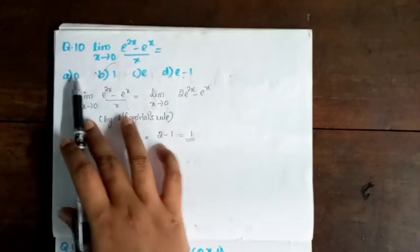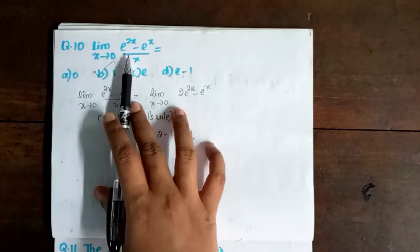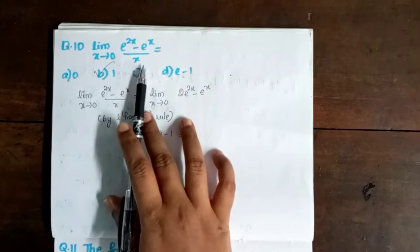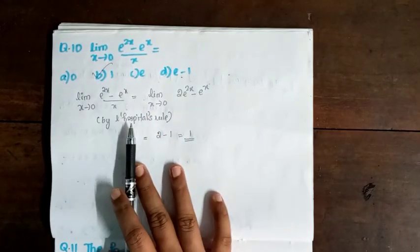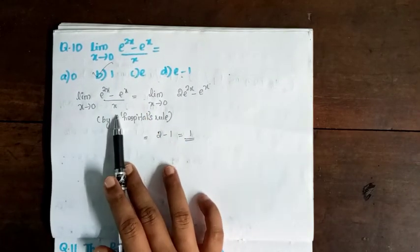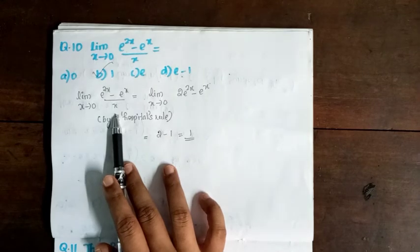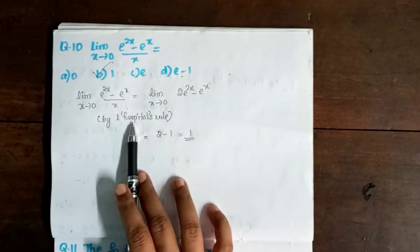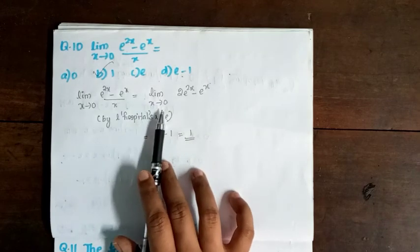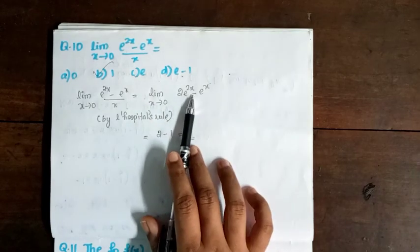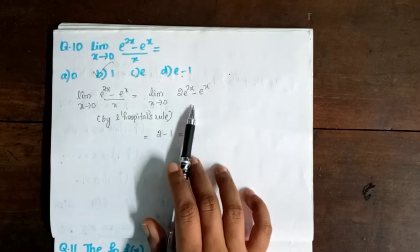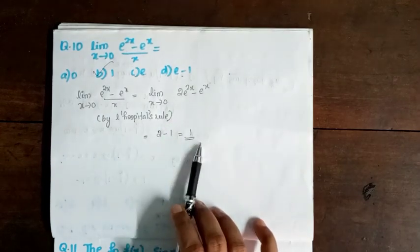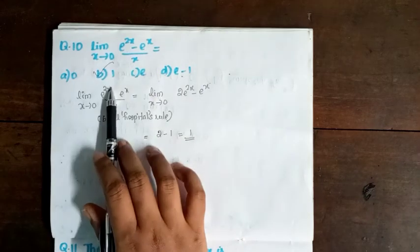Next question: limit x→0 of (e^(2x) - e^x) / x. Simplifying, this equals 2e^(2x) - e^x evaluated appropriately, giving 2 - 1 = 1. Option B is correct.